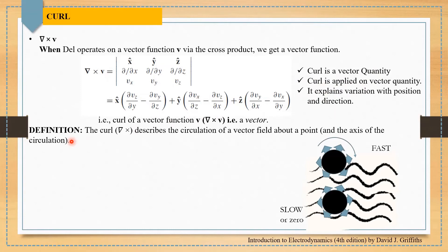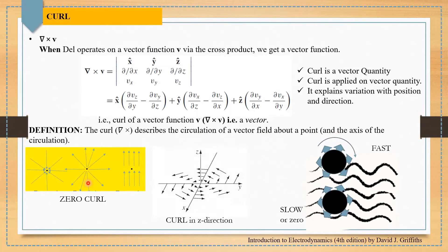In words, curl describes the circulation of a vector field about a point. Looking at three figures, we can see that the first figure has no curl, and similarly the second and third figures also have no curl — all three have zero curl. But if you look at the fourth figure, the arrows are rotating around the z-axis, meaning there is a curl and that curl is in the z direction.